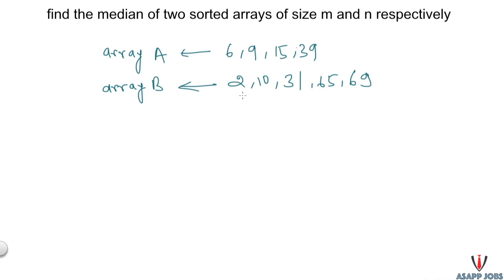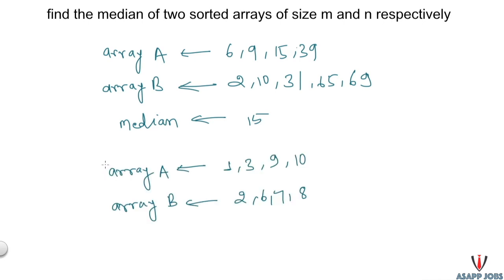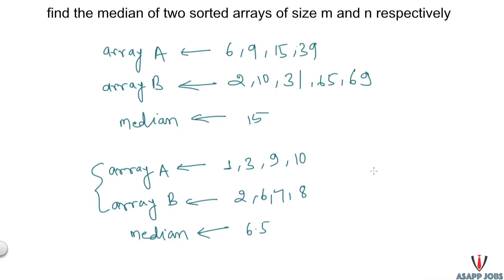In this case our median would be 15. And if we have a different set of arrays as input, our median would be 6.5. The question is pretty straightforward — if you've understood it well, you can pause this video and try to solve it yourself first, or else let's continue to the solution.